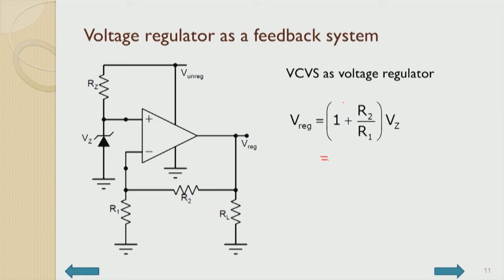As the unregulated voltage varies from minimum to maximum, the current through RZ varies and VZ changes to a certain extent. That variation in VZ gets reflected at the output through the gain factor (1 + R2/R1) — this is equivalent to the line regulation factor.